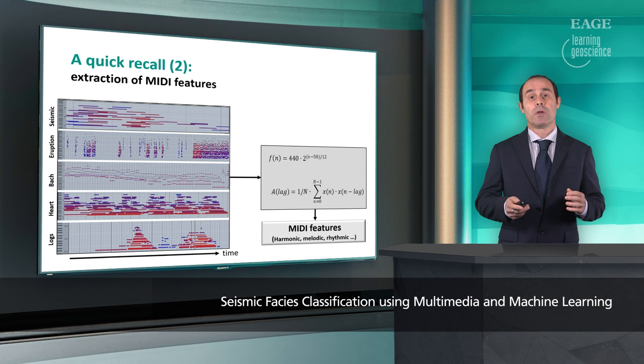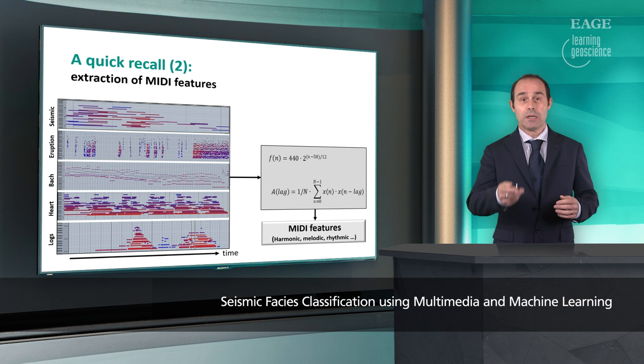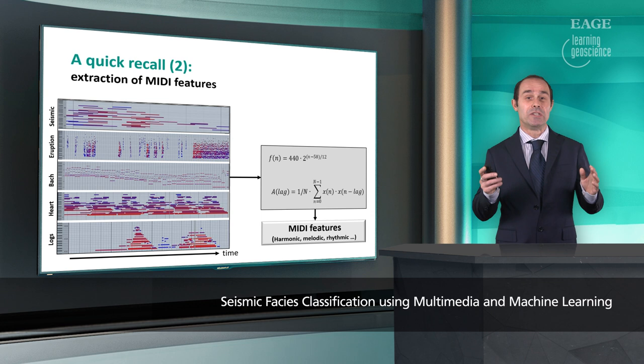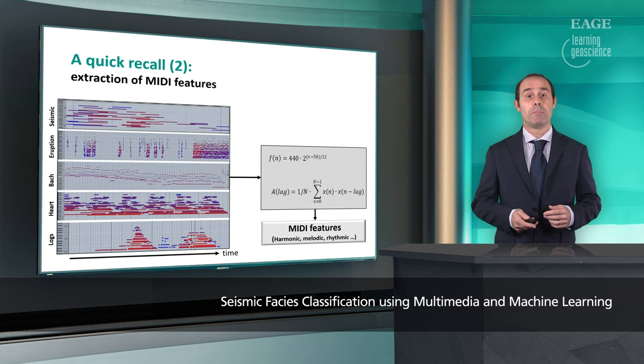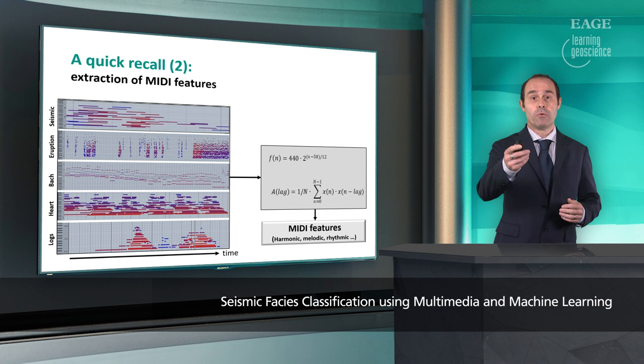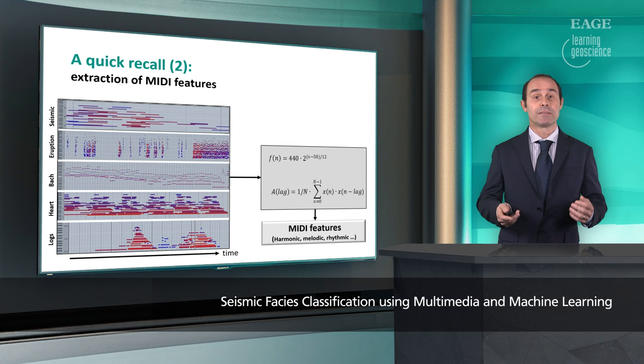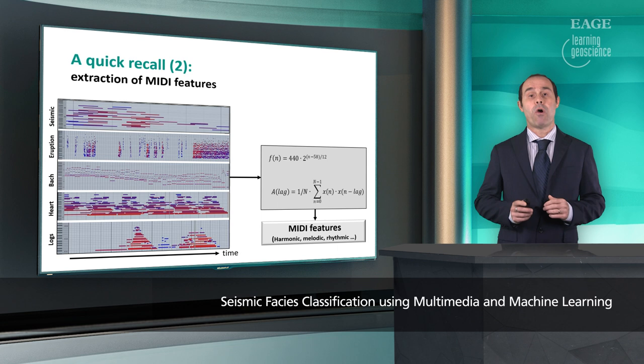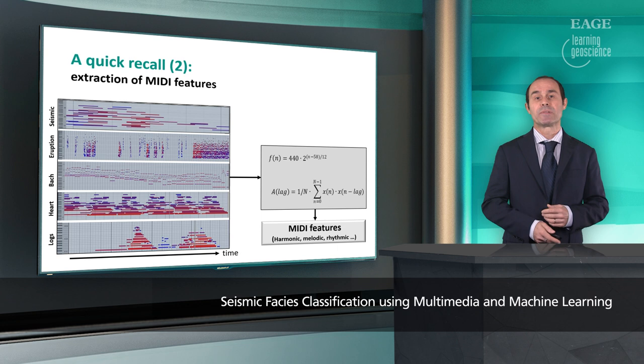For instance, in this particular display, red represents high sound intensity and blue represents low sound intensity. In the second panel we have a MIDI display of a big eruption. In the third panel, a MIDI display of a masterpiece by Johann Sebastian Bach. In the fourth panel, a MIDI display of the earth's heartbeat. And in the last panel, a small piece of a resistivity log represented as a MIDI display.